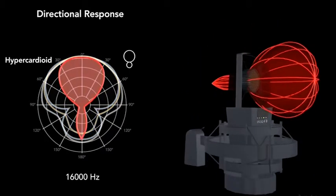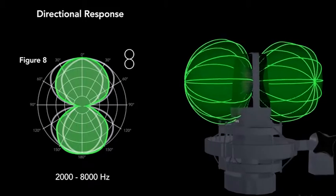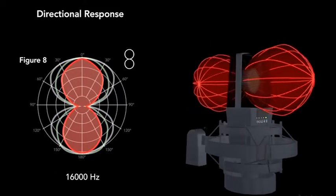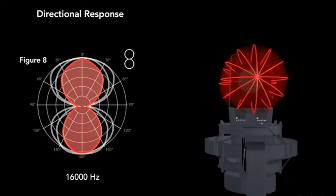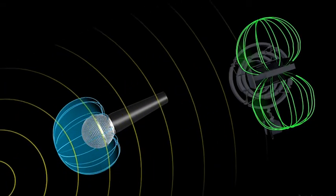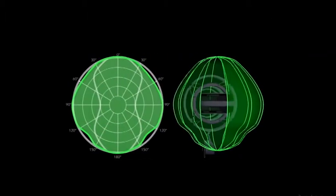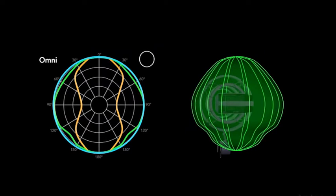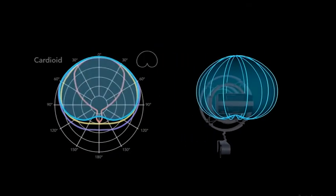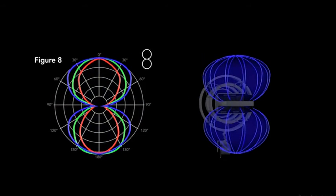A figure 8 or bi-directional microphone picks up almost equally in the front and the back and nearly nothing from each side. Frequency response is usually slightly better on the front side of the microphone, so it sounds a bit brighter from that direction. Figure 8 mics can be very useful when a higher degree of sound rejection is required. Let's review: omnidirectional picks up sound 360 degrees around it, cardioid picks up in a heart-shaped pattern, hyper cardioid pattern is even less sensitive to sounds coming from the sides, and finally, figure 8 or bi-directional pattern picks up equally from the front and back and almost nothing on the sides.